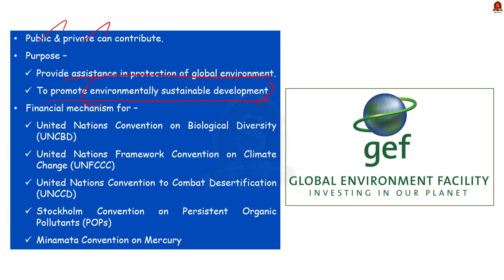GEF also serves as a financial mechanism for conventions like the United Nations Convention on Biological Diversity (CBD), the United Nations Framework Convention on Climate Change (UNFCCC), the United Nations Convention to Combat Desertification (UNCCD), the Stockholm Convention on Persistent Organic Pollutants (POPs), and the Minamata Convention on Mercury. Among these five, the Earth Summit directly led to the creation of CBD, UNFCCC, and UNCCD. The other two were created later and added to GEF.